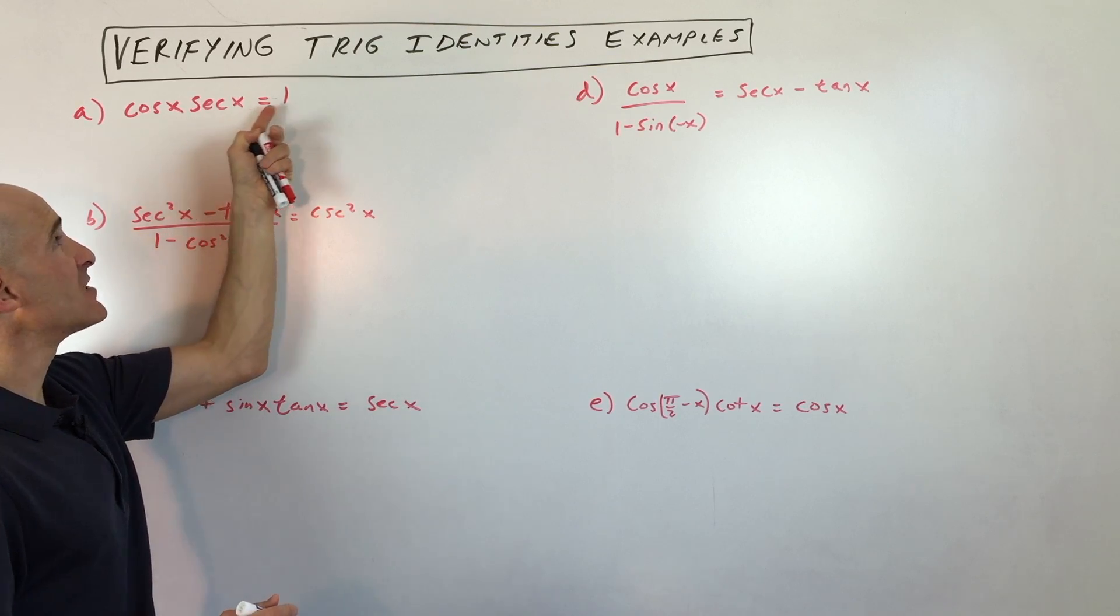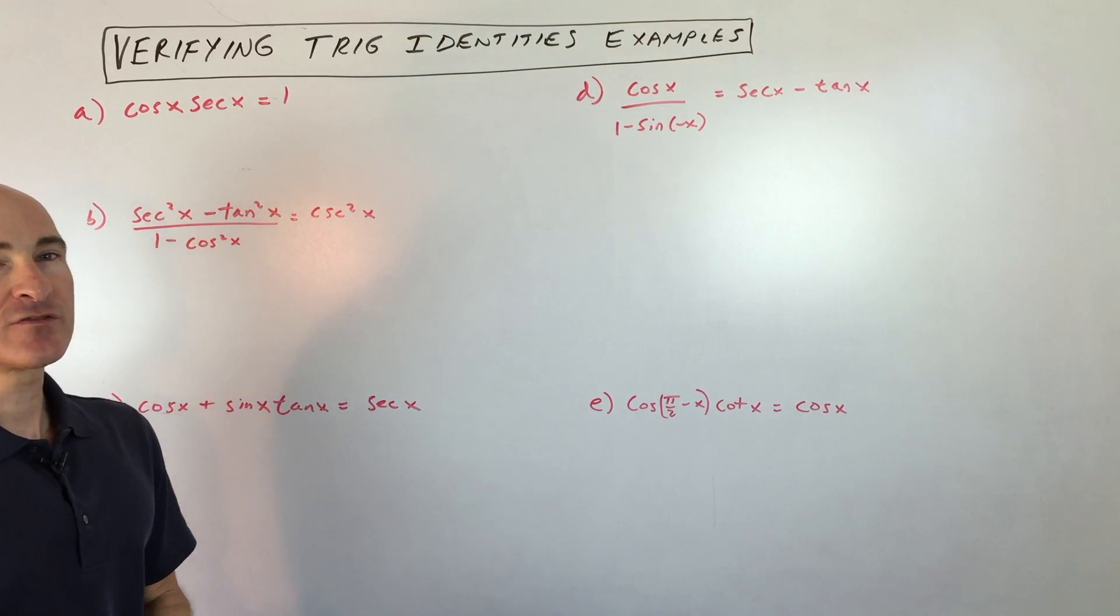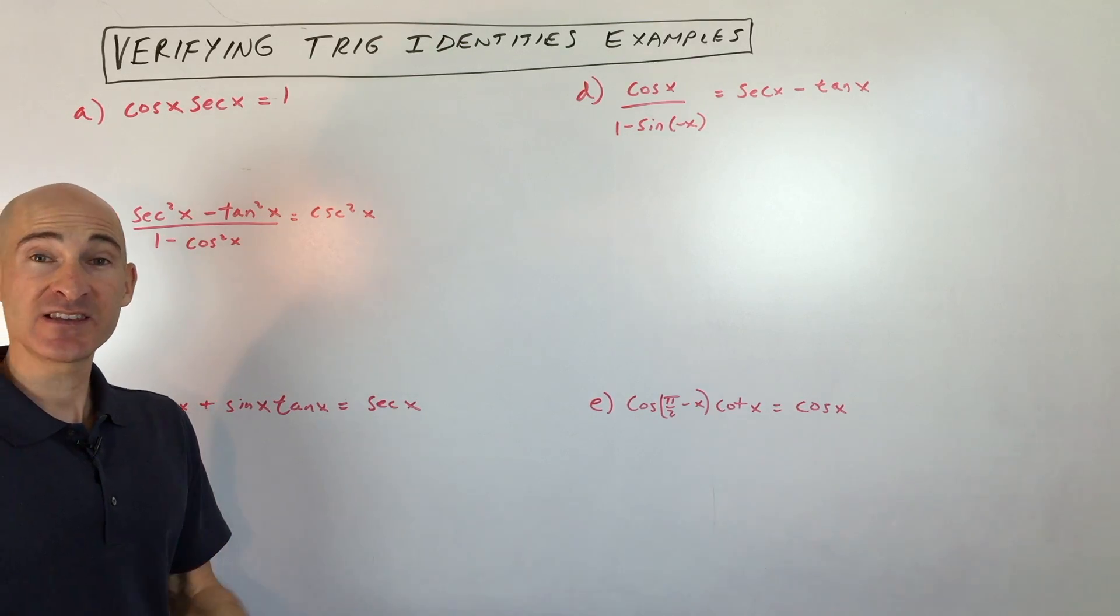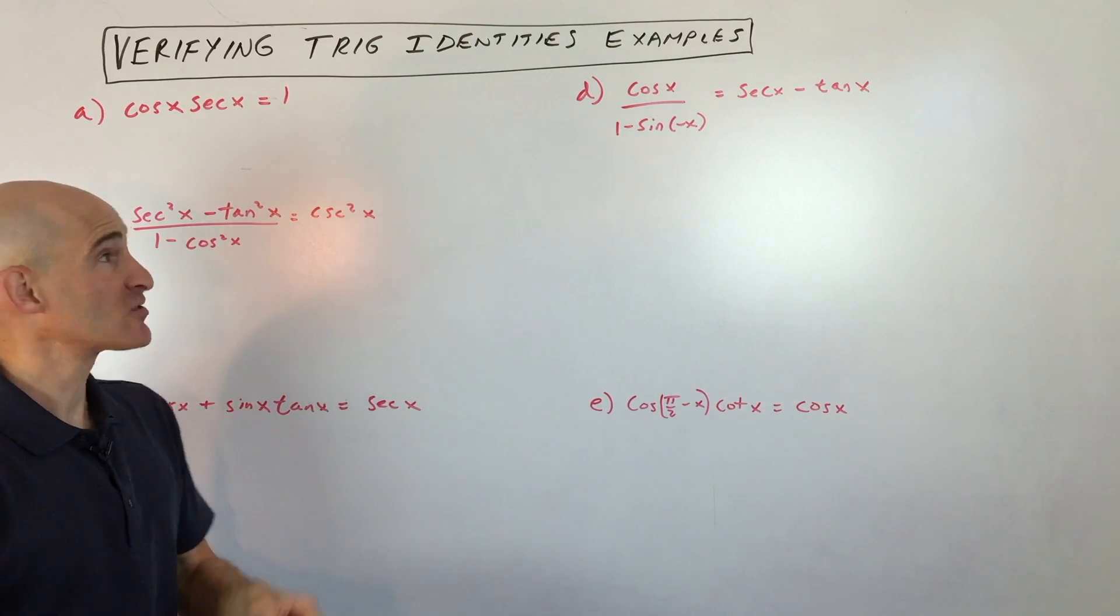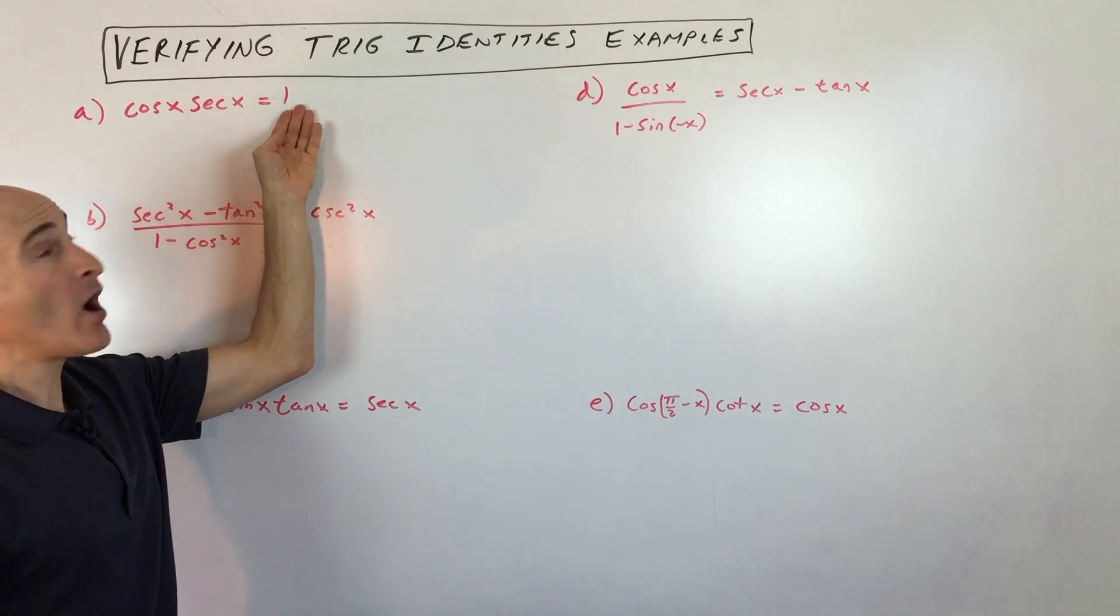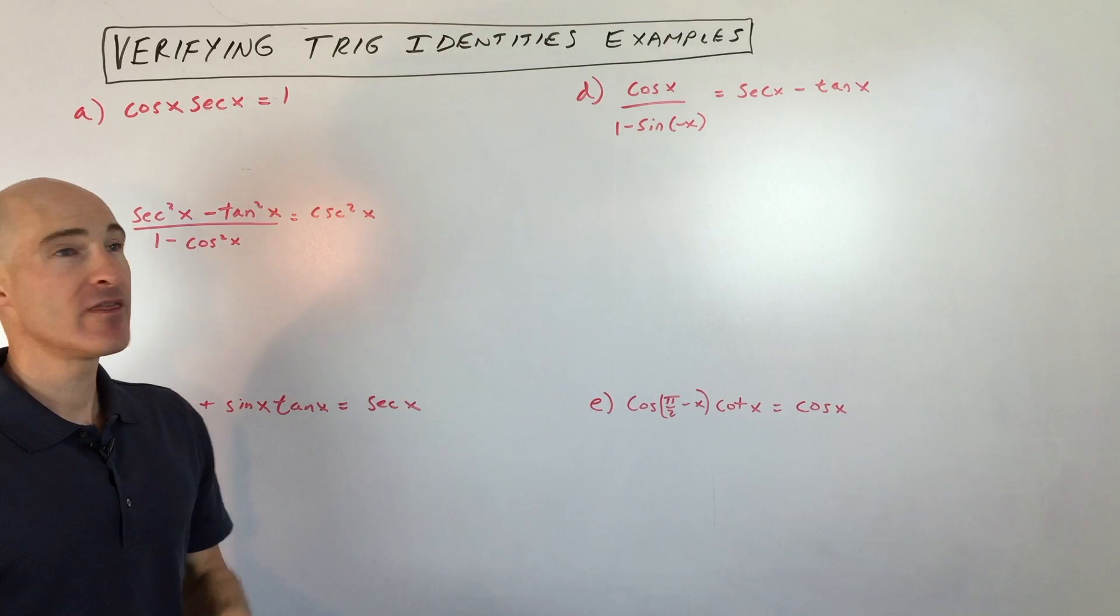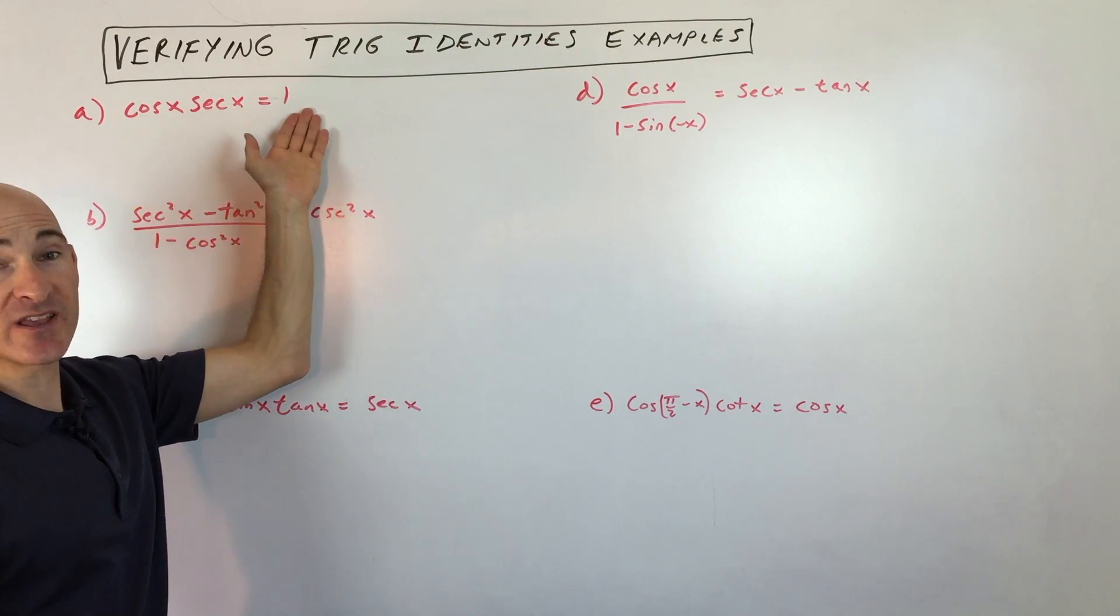So cosine x times secant x equals 1. First of all, let me say that when you're verifying trig identities, the nice thing is that they give you the answer. So we know that this equals 1, we just have to show step by step or verify or prove that the left side equals the right side.